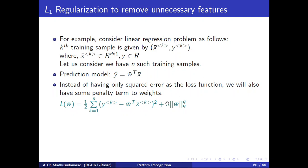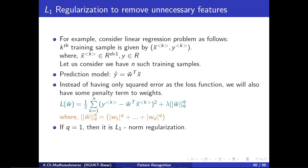Lambda is a positive quantity. If lambda is very high, we add more penalty for weights; if lambda is less, we add less penalty. Lambda equal to 0 means no penalty at all. The penalty uses the L-q norm: norm-q to the power q equals mod(w1) to the power q plus ... plus mod(wd) to the power q. If q equals 1, it is L1 norm regularization. If q equals 2, it is L2 norm regularization.